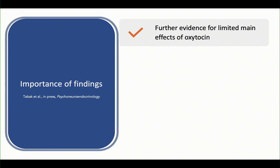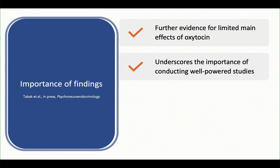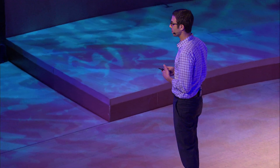So why is this important? It's further evidence for limited main effects. I don't want anyone to misinterpret that as meaning there are no main effects of oxytocin — there might be. We didn't see them within our 18 outcomes across quite a few social tasks, but there are many social tasks. Also, moderation and interactions seem to be very important, and that suggests doing well-powered studies is always a good idea — especially if you're looking at interactions in oxytocin research, because you're going to need more people.